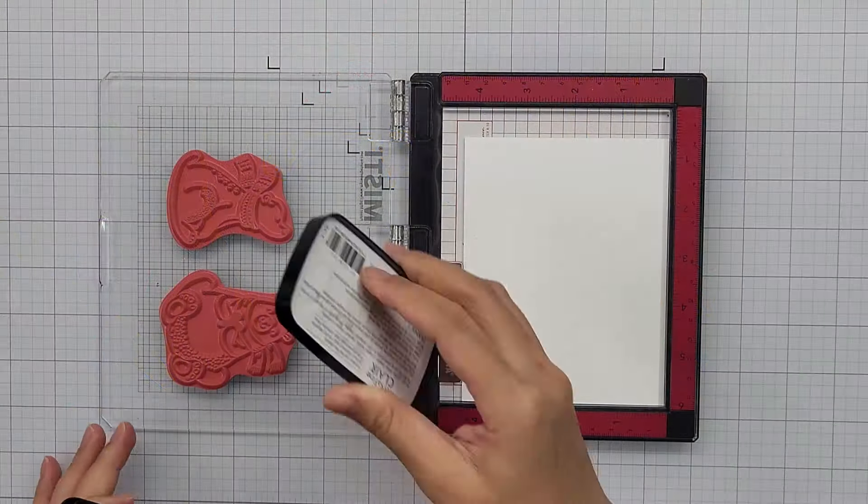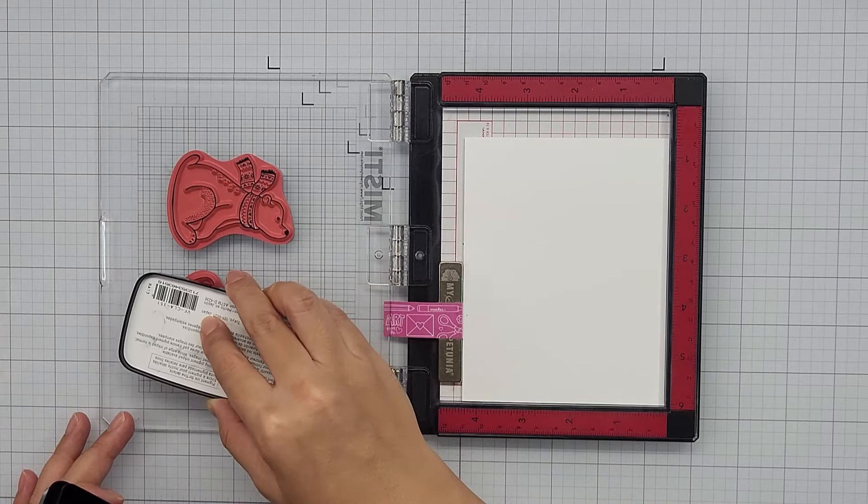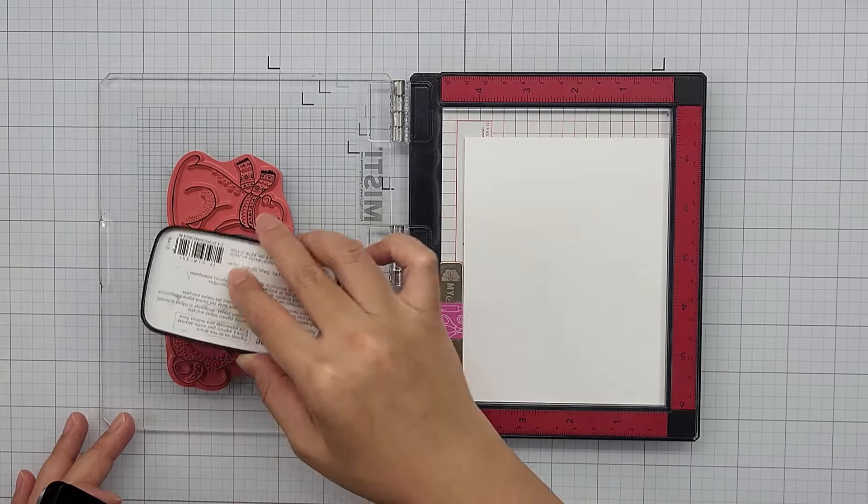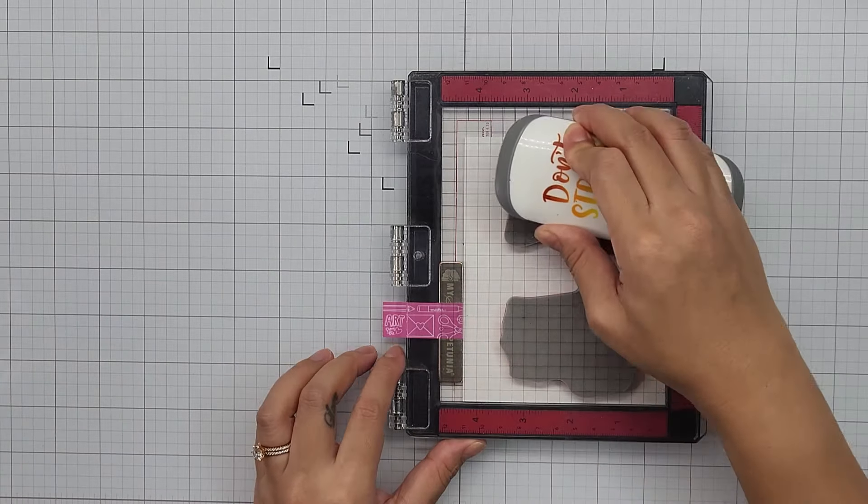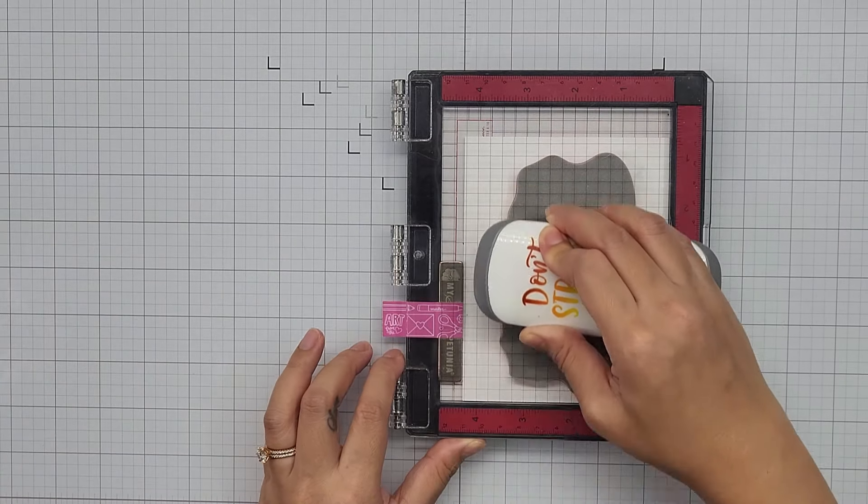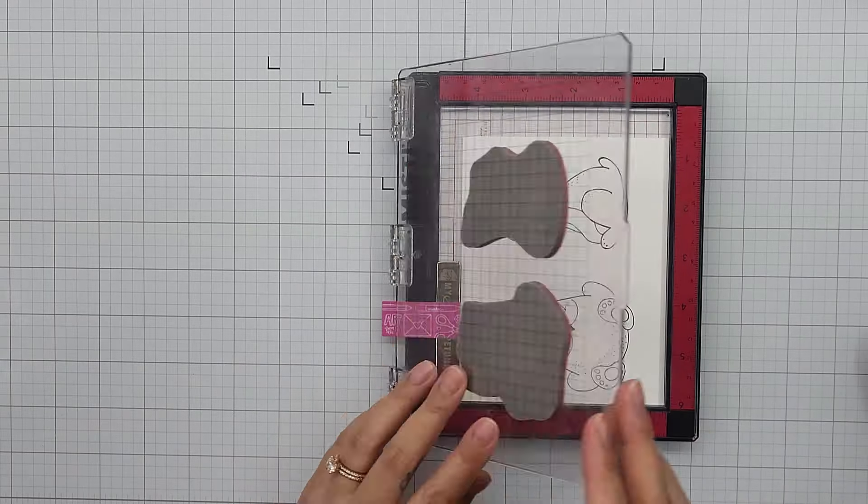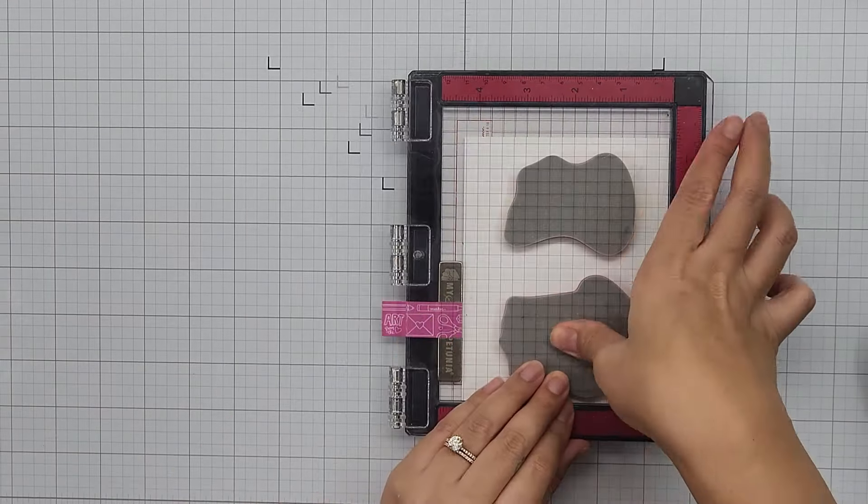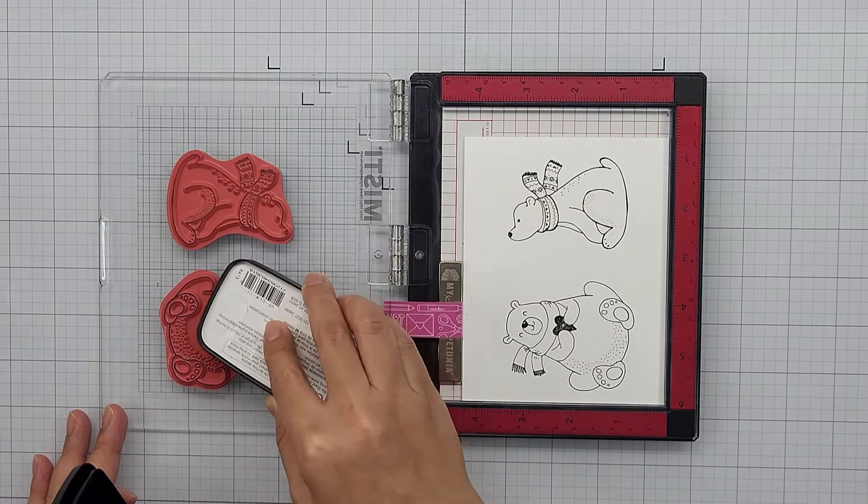To begin my project, I place a sheet of Sugar Cube cardstock into my stamping platform. I am using VersaMark Clear ink and inking up two of the stamps from the Bear Hug stamp set. I am using my Just Press It tool to help with getting even pressure. Since the heart was a solid image, I did have to apply a little bit more pressure around that area to make sure to get a good impression.